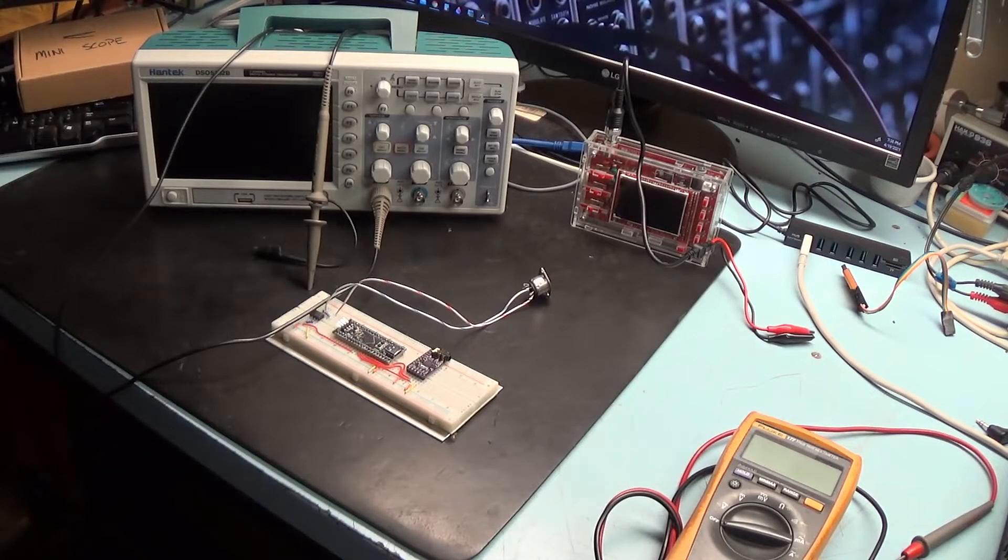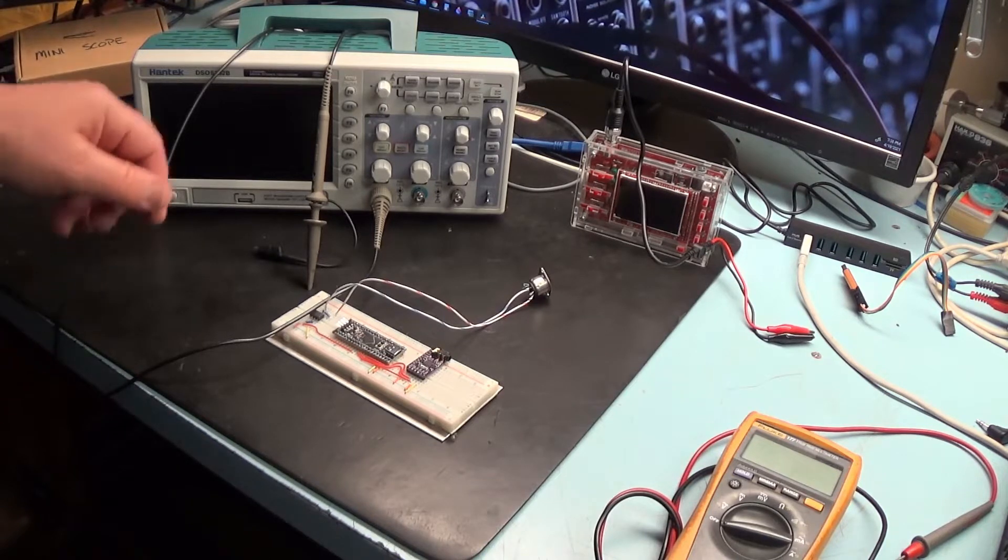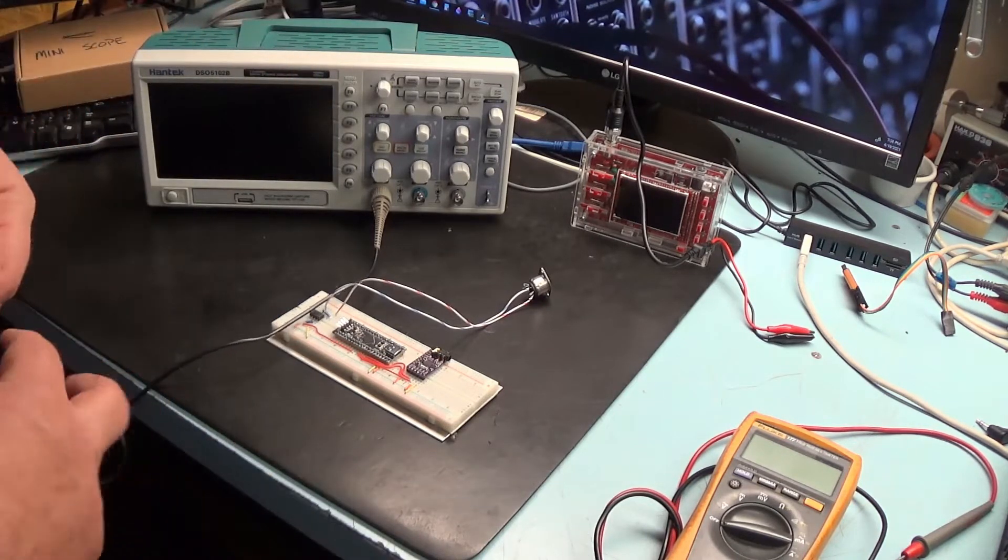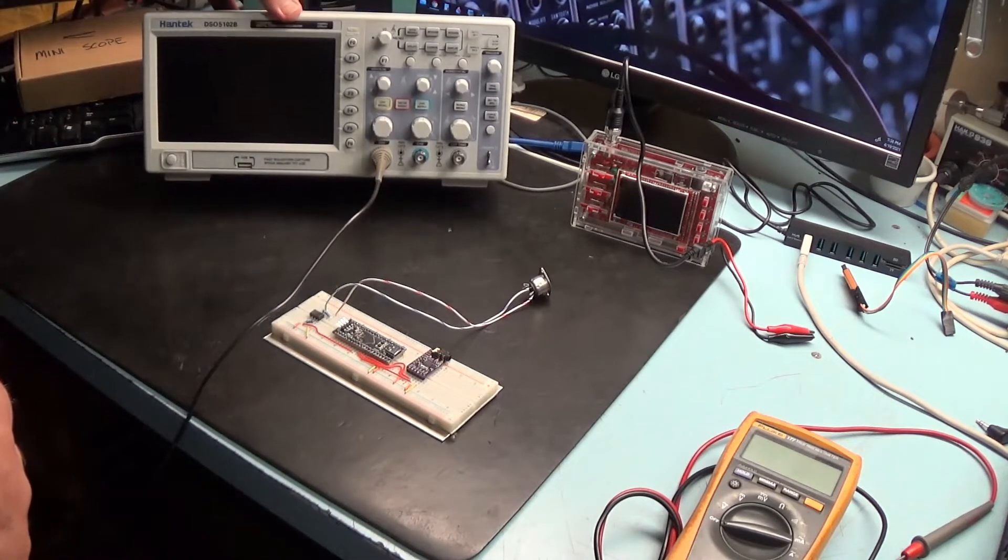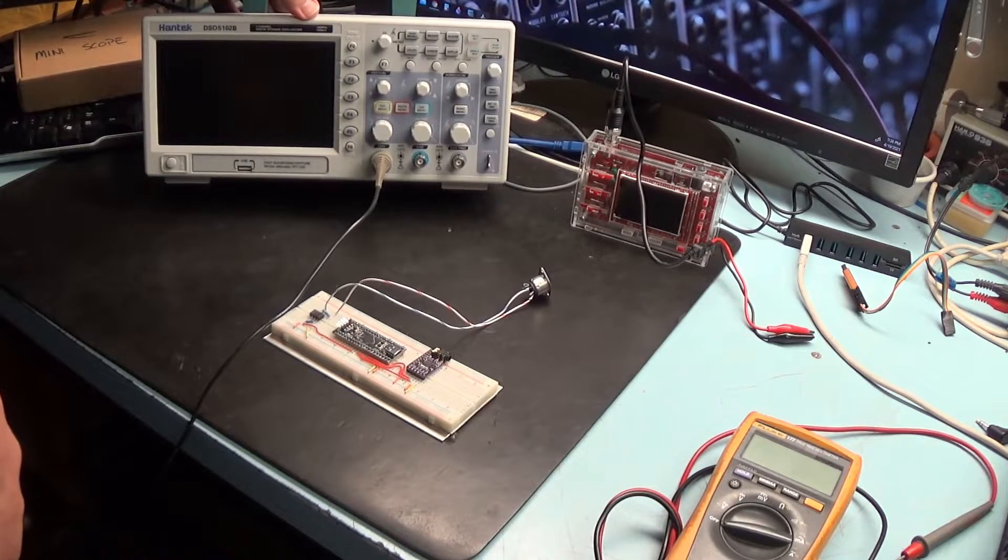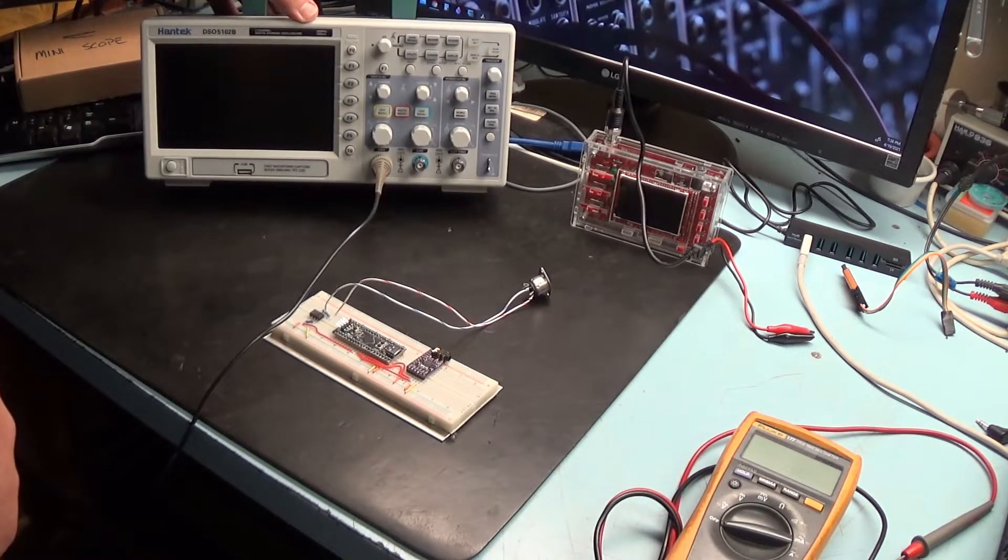Another useful tool for troubleshooting problems is an oscilloscope. Over here on the left we have a fairly fancy one. This one runs probably about three hundred dollars. It's made by Hantek. It's an LCD scope and this is a 100 megahertz scope. It can view high-speed signals.